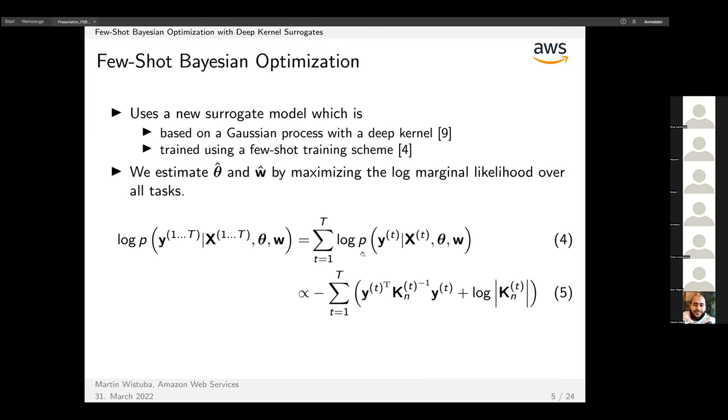What we do in few-shot Bayesian optimization is basically replace the standard surrogate model GP with a specific type of GP that uses the deep kernel I just mentioned, and there's another difference—it's not trained in the standard way but using a few-shot training scheme.